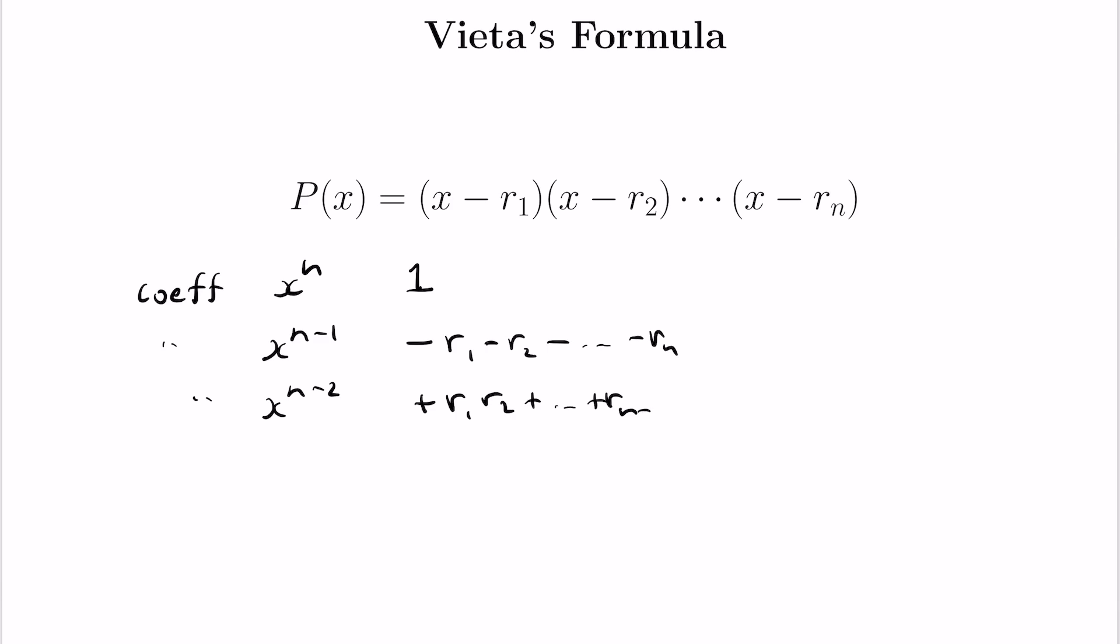r1 up to r2 all the way to rn minus 1, rn, etc., until we get to the coefficient of x to the 0, which is the product of the roots multiplied by negative 1 to the n. So this interesting phenomenon will allow us to address a lot of different problems.